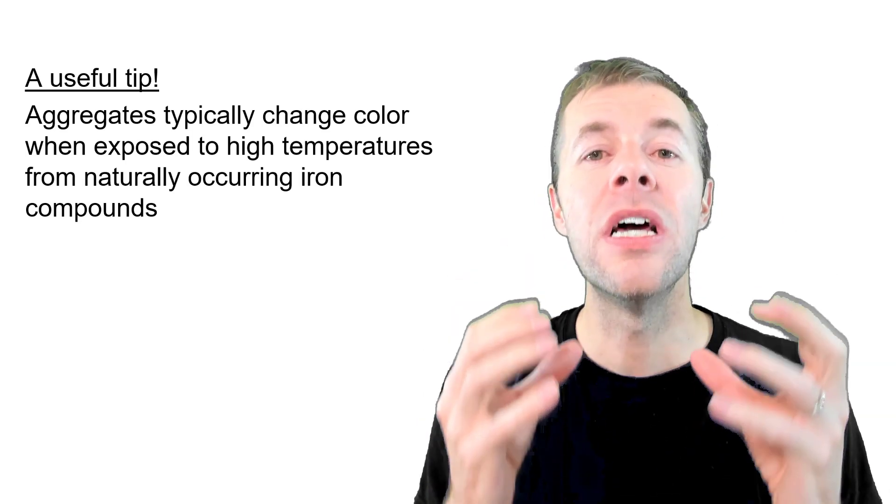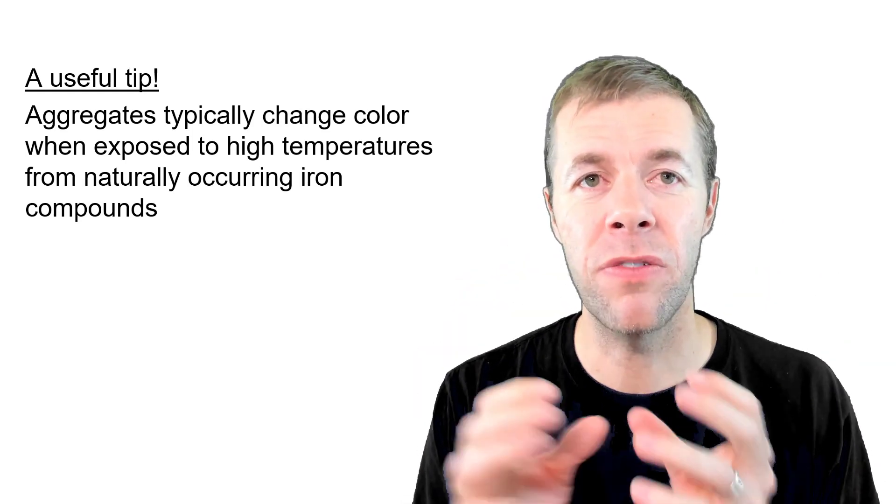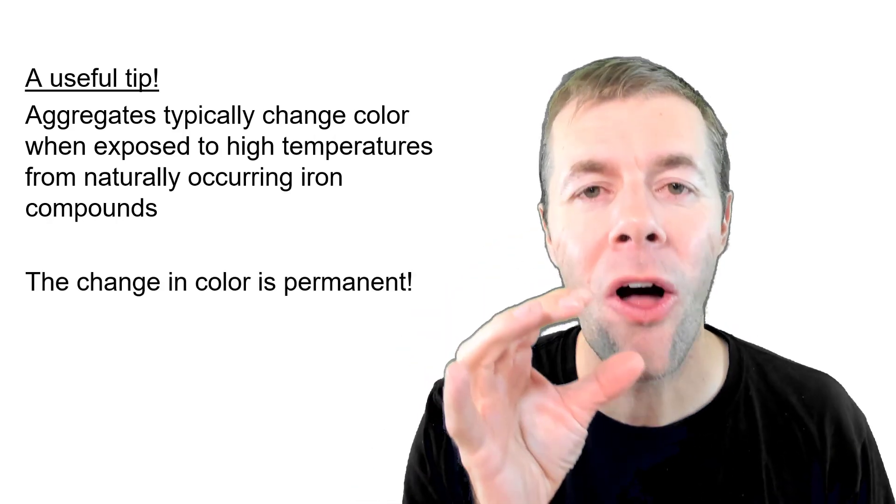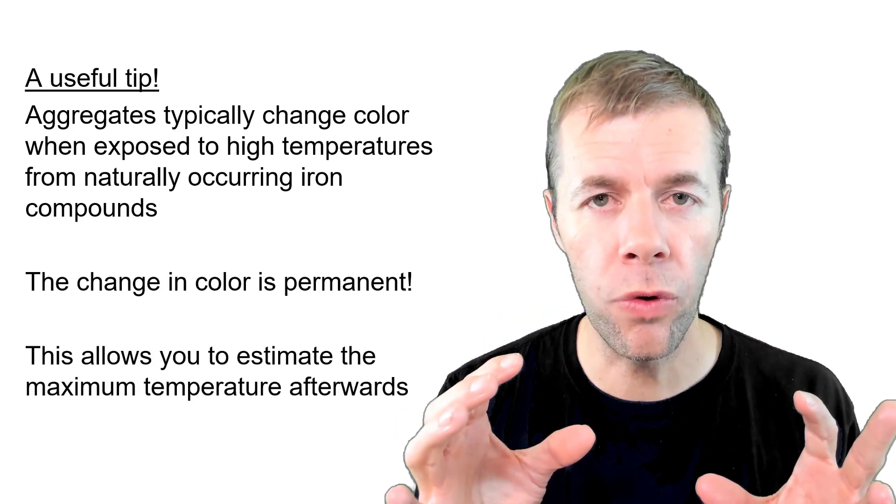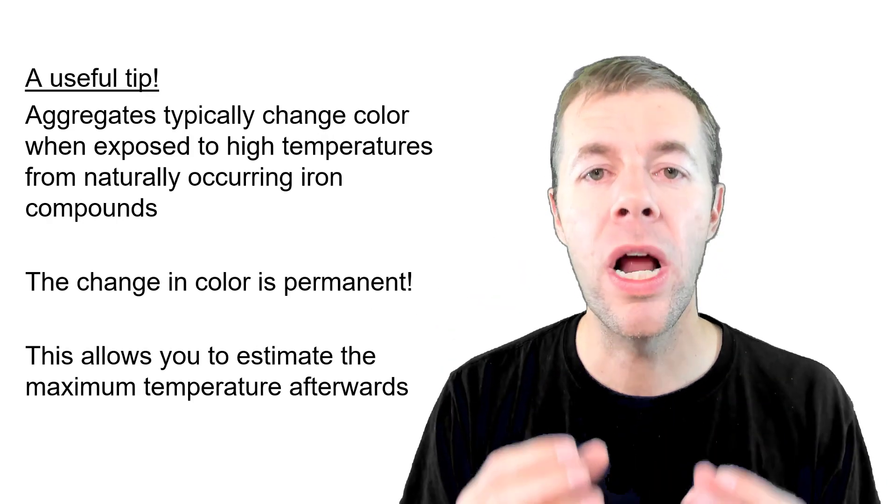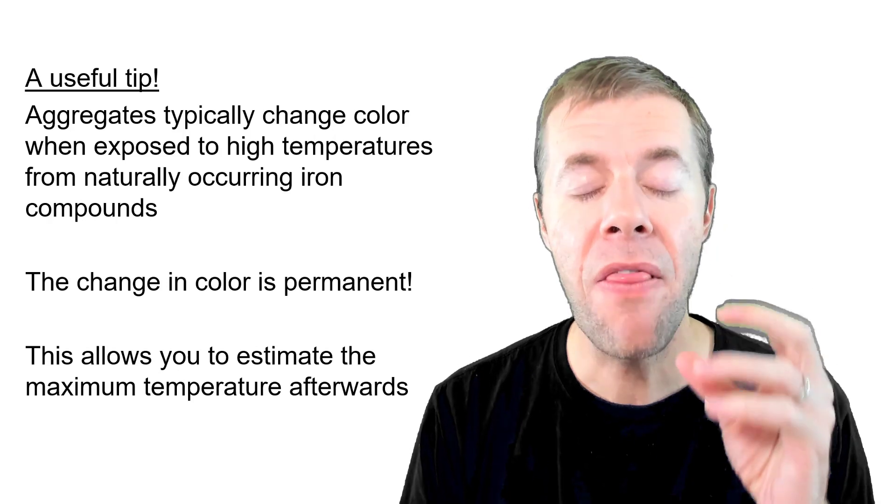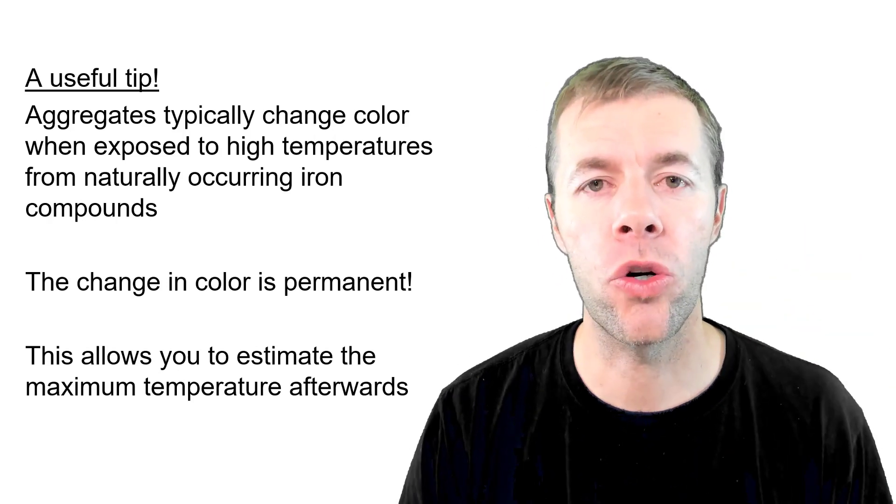Here's a crazy useful tip. The aggregates typically change color during the fire because of the iron inside of them. But the change in color is permanent. It's locked in. So you can come back after the concrete's cooled down. You can hit it. You can knock it open. You can take a core and you can look inside at the color changes in the aggregates. And that gives you a great idea at what temperature the concrete got to.